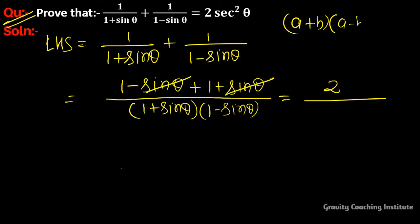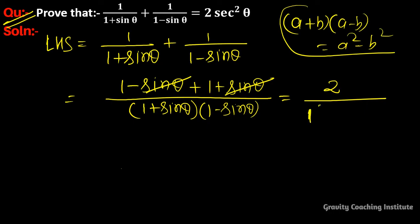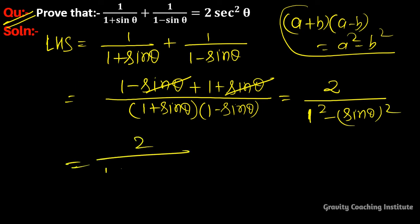So (a+b)(a−b) = a²−b², which gives us 1²−sin²θ in the denominator. Therefore this equals 2/(1−sin²θ).